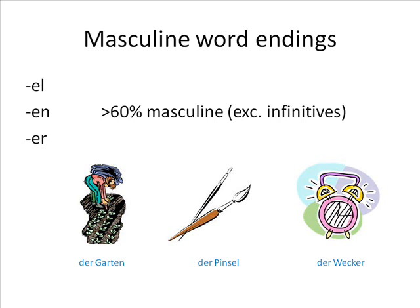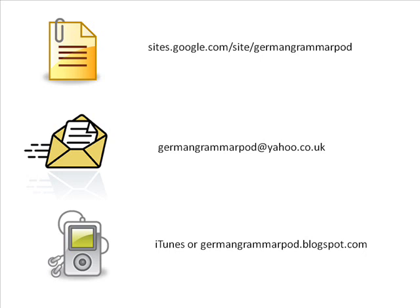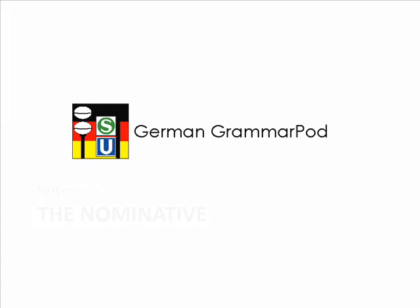Well, that's it for this time. If you'd like to see a transcript of this episode, or some of the facts I've given you shown in table form, you can visit my website at sites.google.com/site/germangrammarpod. If you'd like to contact me, you can email me at germangrammarpod@yahoo.co.uk. You can also subscribe to the German GrammarPod podcast through iTunes, or by visiting germangrammarpod.blogspot.com. If you'd like to be notified when I post more German GrammarPod videos, click the subscribe button under this video. Next time I'll be talking about the nominative, but for now it's goodbye from German GrammarPod. I hope you enjoyed the episode and that you'll listen again next time. Goodbye!